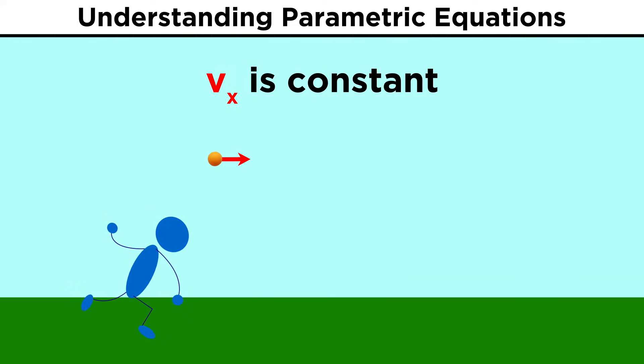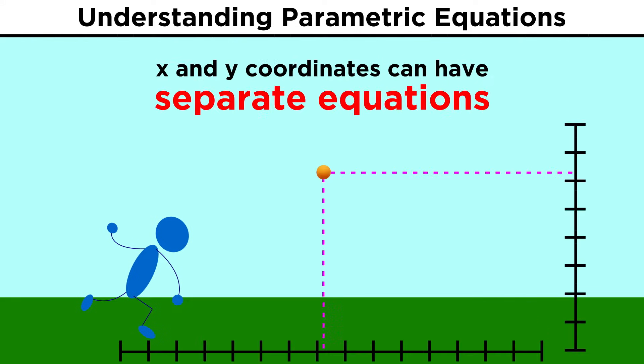Its horizontal velocity will be constant if we ignore wind resistance, but its vertical velocity will be constantly decreasing from the moment of release, because gravity will be continuously accelerating the ball in the negative direction towards the ground.